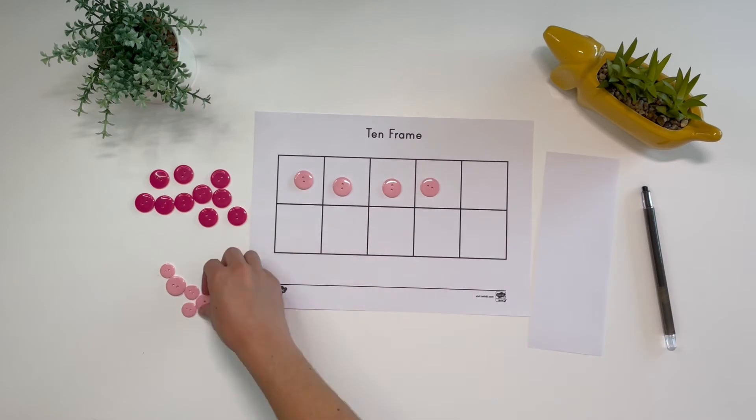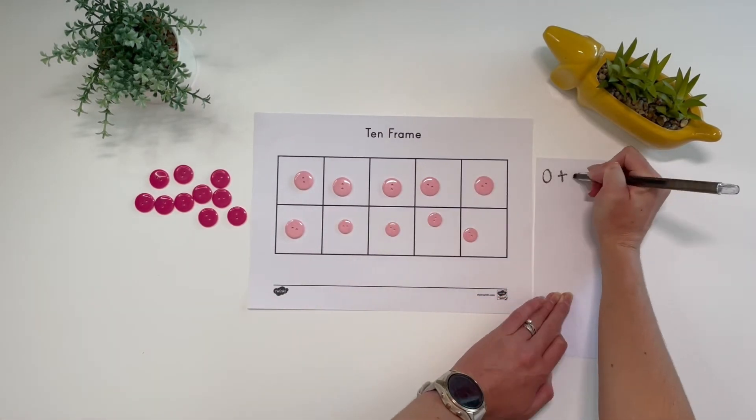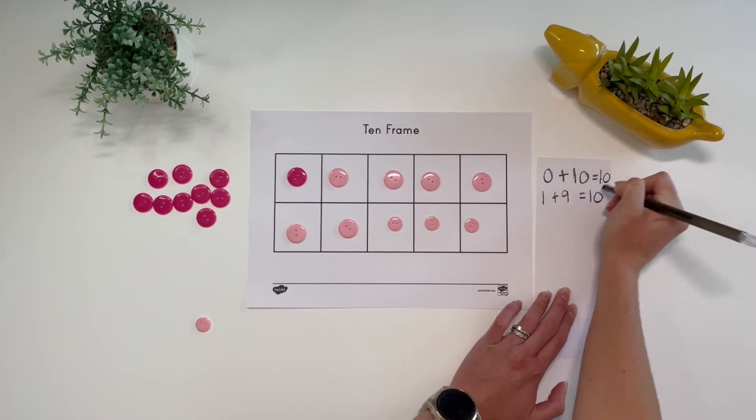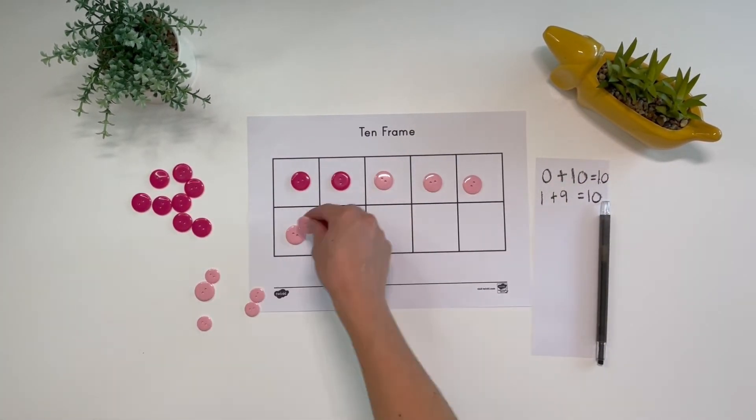You could see if children can find all of the different number bonds to ten using buttons and write them down. They can then check their answers using the flashcards.